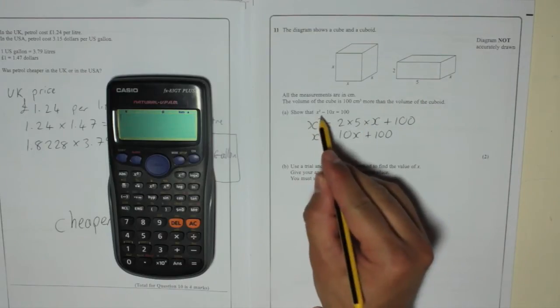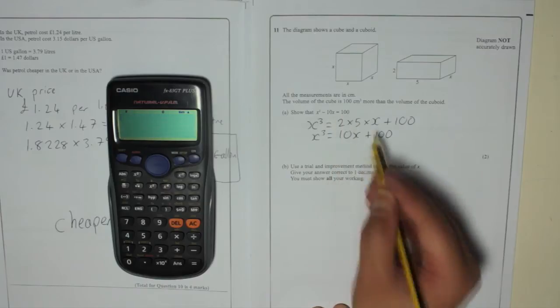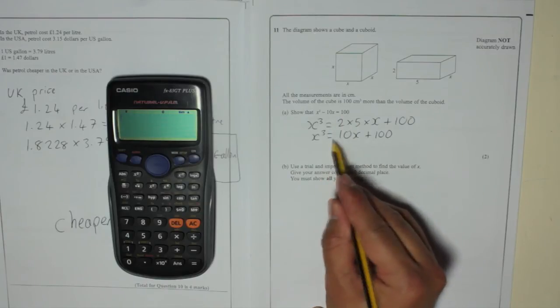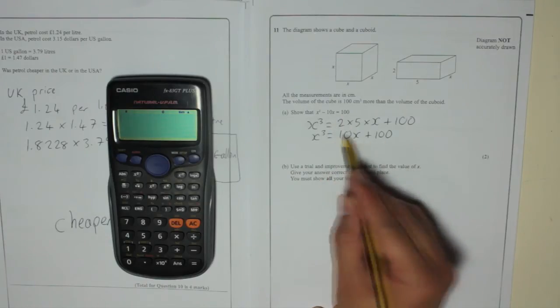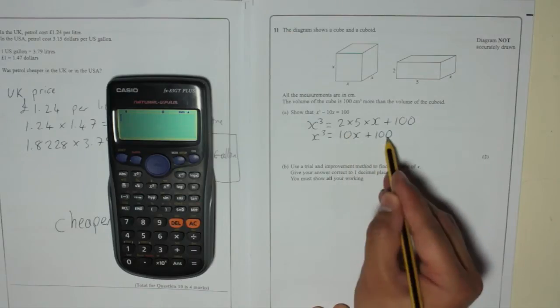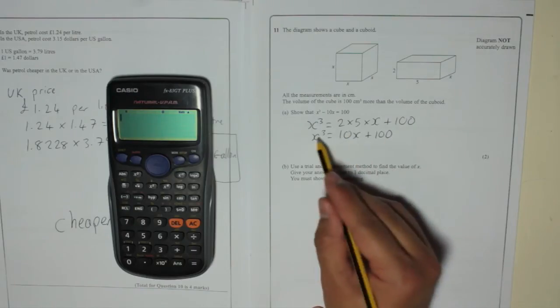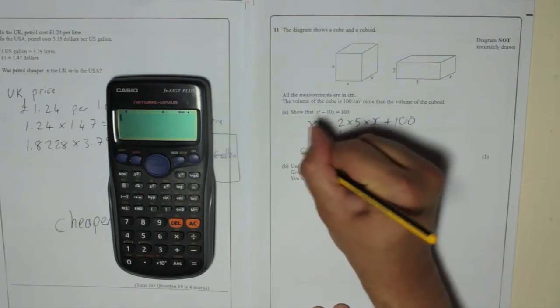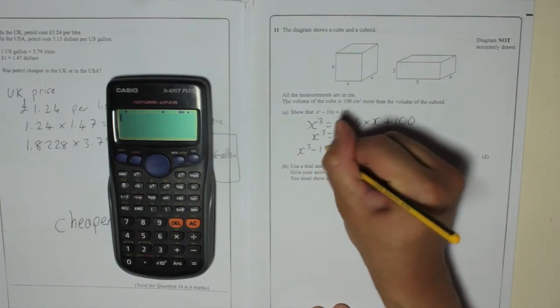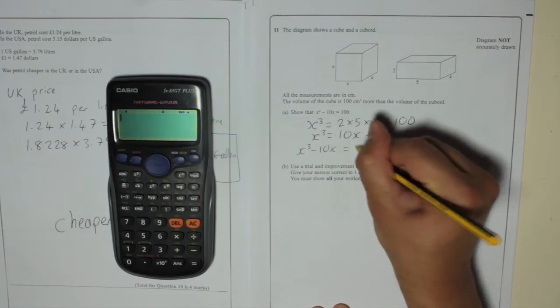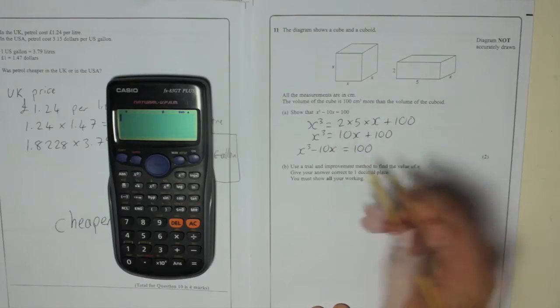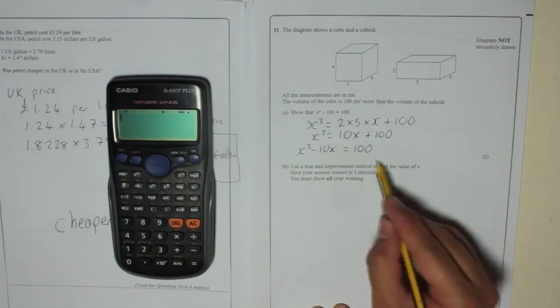Now this says, show that X cubed minus 10X equals 100. Well, look, you've got X cubed equals 10X plus 100. So if you minus 10X from there, it's going to leave 100. But it also means you're going to minus 10X from there, which gives you X cubed minus 10X is equal to 100, which is what it said there. So we've got it.